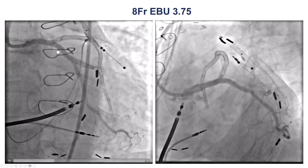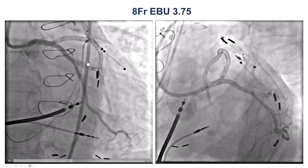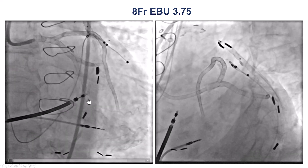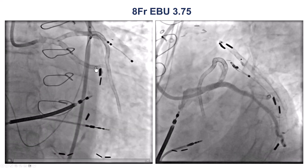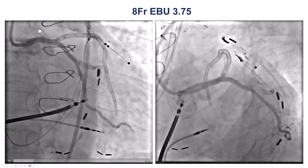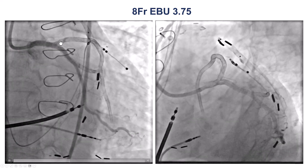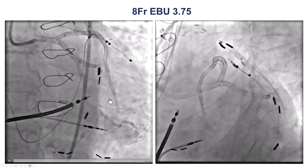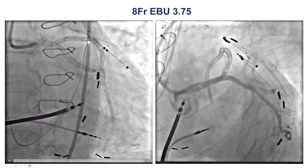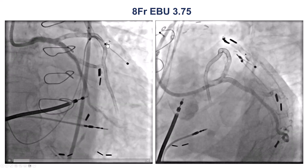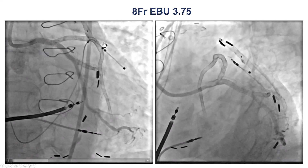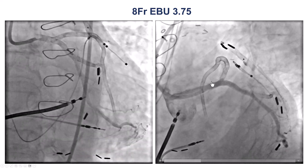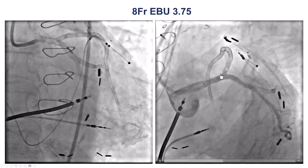These are his arteries. You can see there is a full metal jacket into the LAD, full metal jacket into the circumflex and obtuse marginal branch. This is extensive stenting, and the LAD is completely occluded. This was considered to be the culprit vessel for the patient's symptoms.